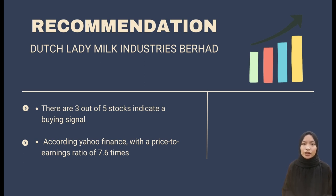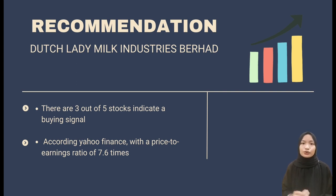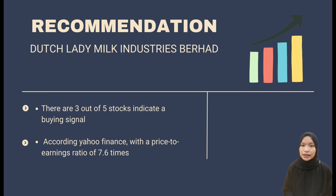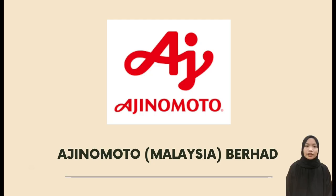Moving to the recommendation for Daslady Company, 3 out of 5 indicators — Moving Average Convergence Divergence, Rate of Change, and Relative Strength Index — indicate a buying signal. According to Yahoo Finance, Daslady Industry Berhad may be sending a bullish signal with a price-to-earnings ratio of 7.6 times, since nearly half of all companies in Malaysia have a ratio greater than 14 times. As a result, the investor should purchase the stock to obtain future financial gain.